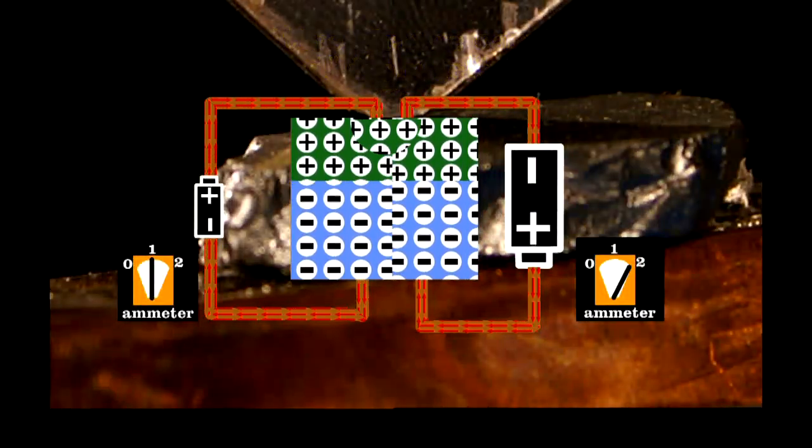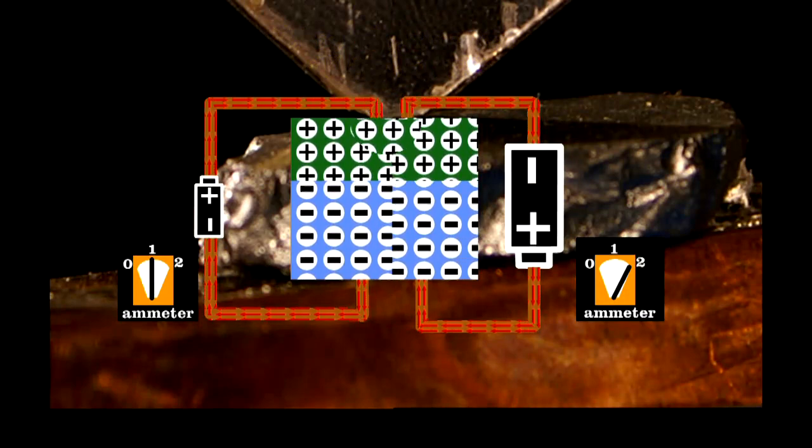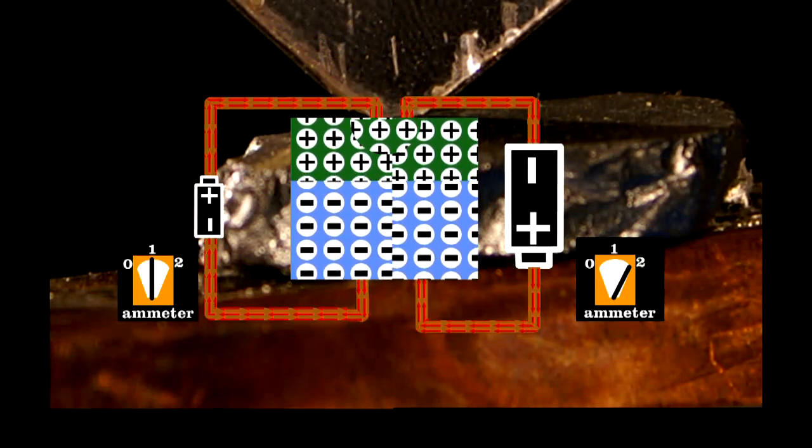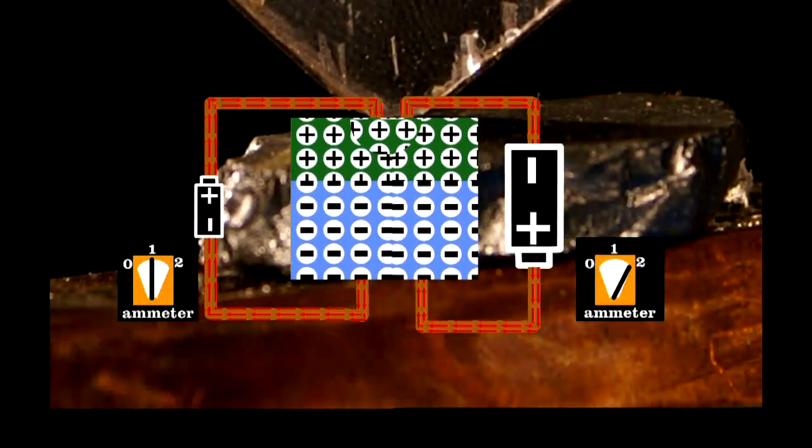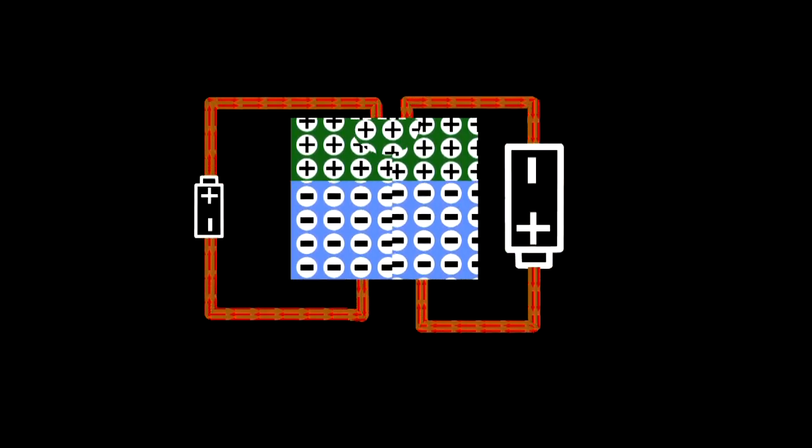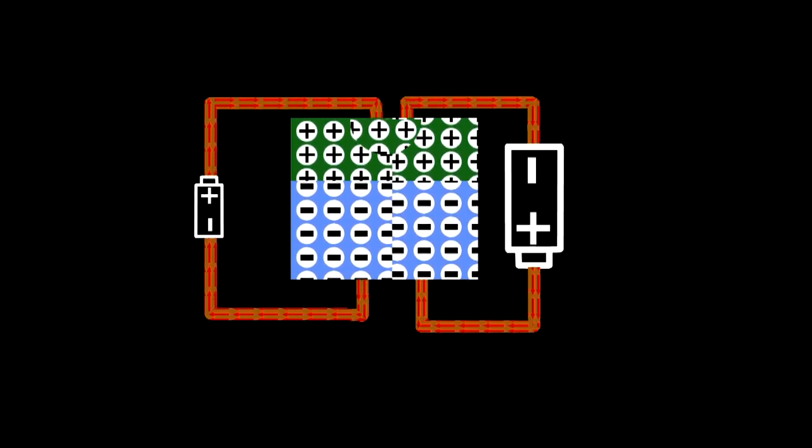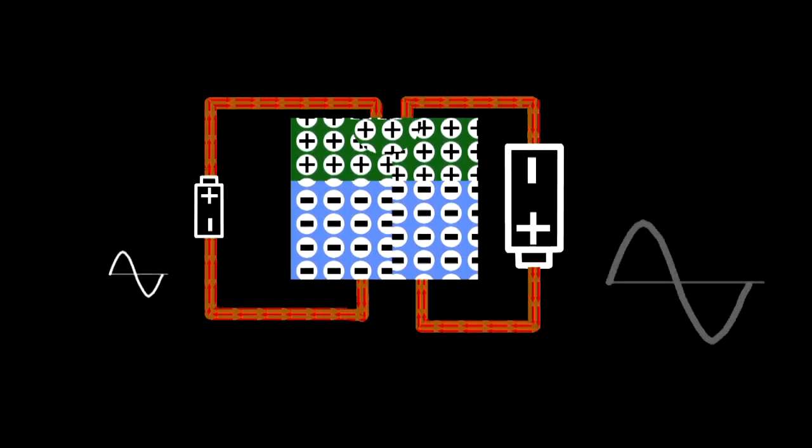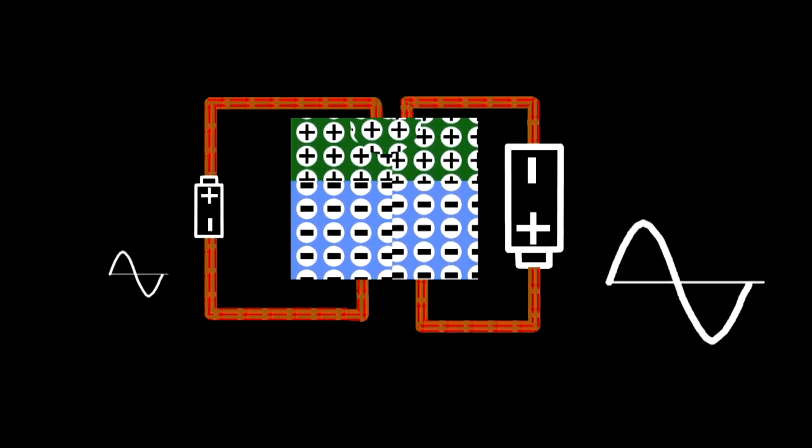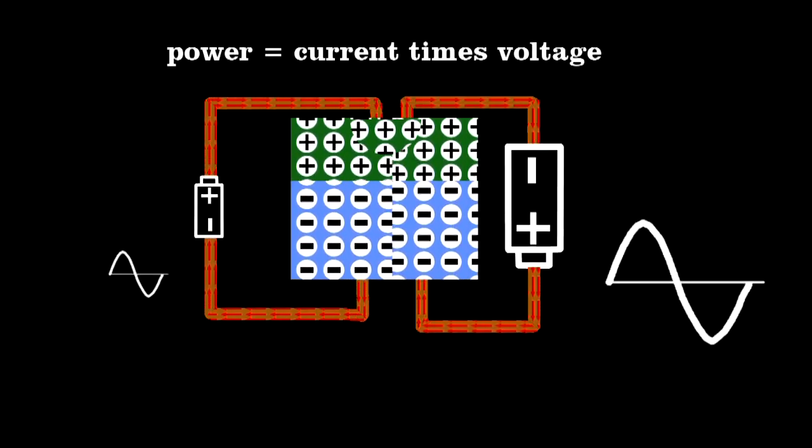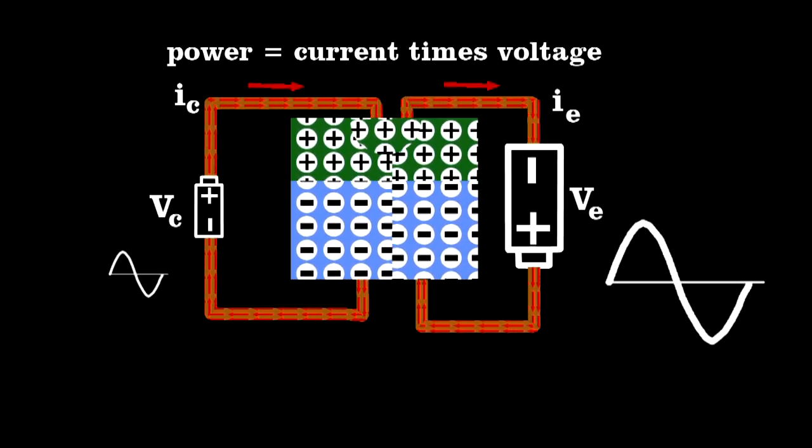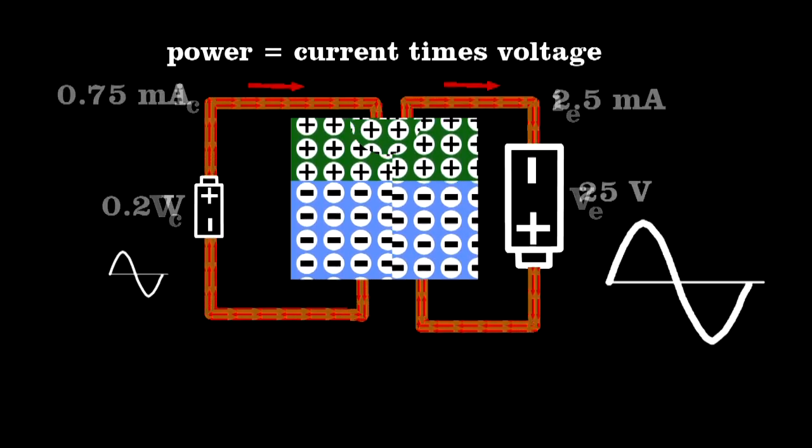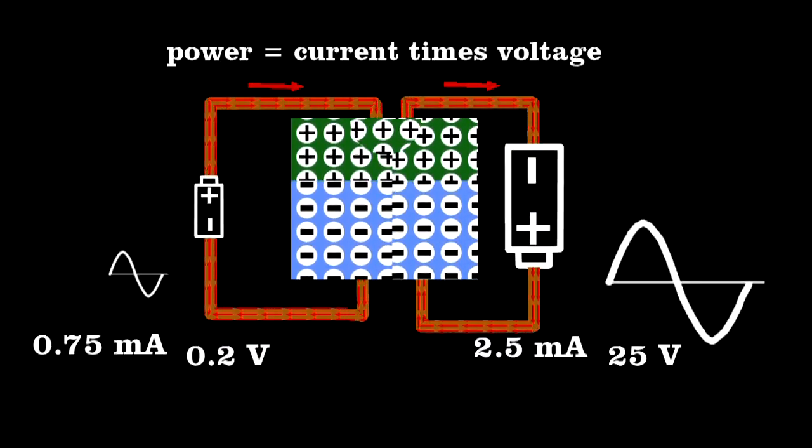The current on the right is controlled by that on the left. It seems that we've gone to great lengths to just make a tiny current flow. The current on the right isn't much bigger than on the left. But if we look carefully, we can see why this revolutionized the world. We've created a signal amplifier. The key element is the battery. Recall that power is current times voltage. So if we use a small battery on the left and a large one on the right, we have a device that amplifies any fluctuations in the current on the left side.